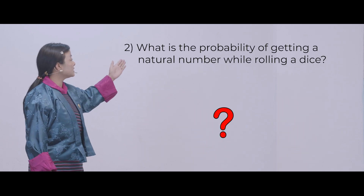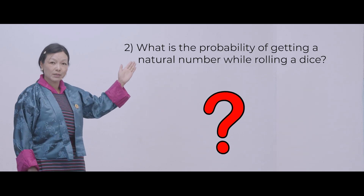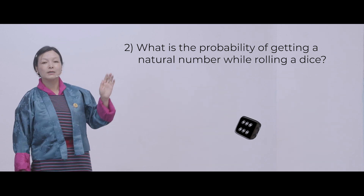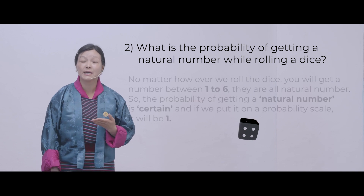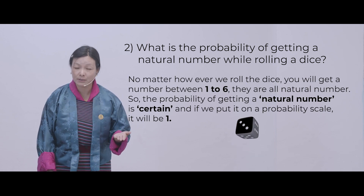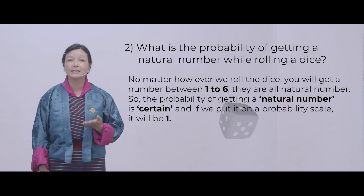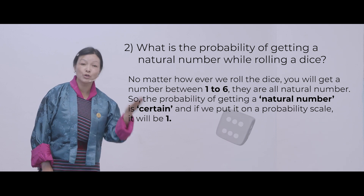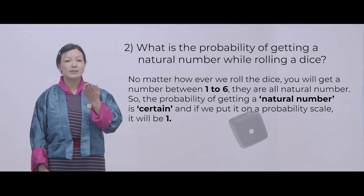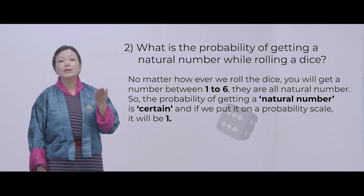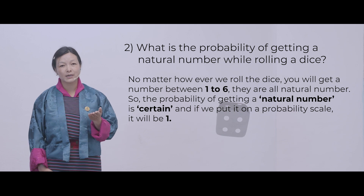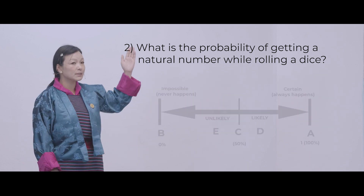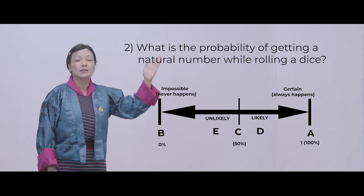Can we look at the second example? What is the probability of getting a natural number on a dice? No matter how we roll a die, we will always get natural numbers because on a die there are numbers from 1 to 6, and 1 to 6 are all natural numbers. So if we place it on a number scale, we will place it at 1.